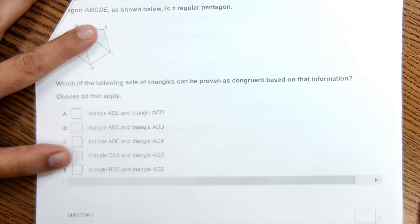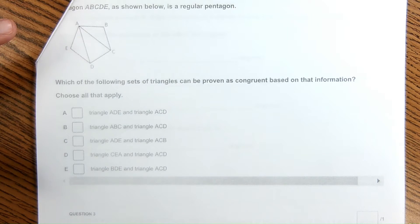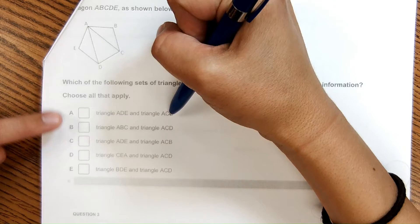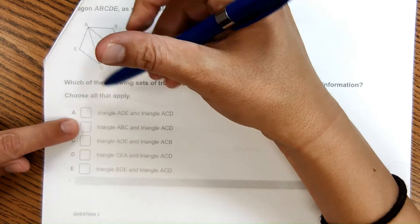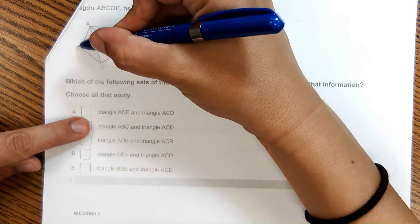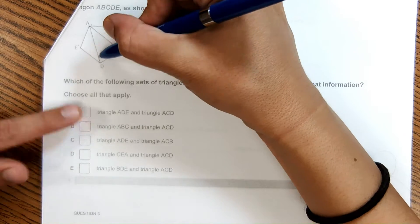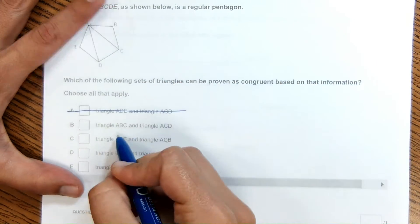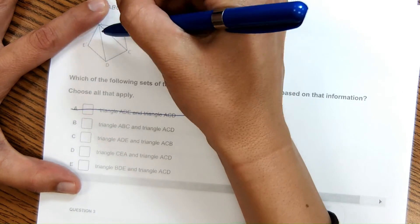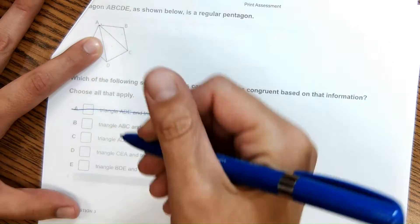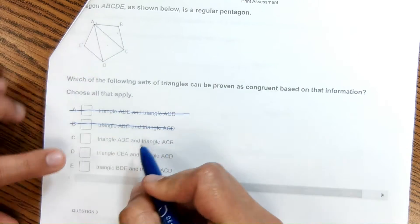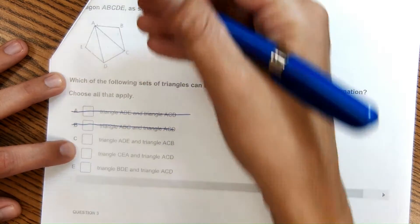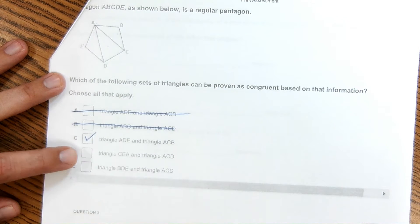Next question. Which of the following sets of triangles can be proven as congruent based on the information? Choose all that apply. I'm going to go through each answer choice and determine whether those triangles are congruent. ADE and ACD, I can see right away those two triangles are not congruent, so this is not an answer. ABC and ACD, again, I can see that this triangle and this triangle are not congruent. ADE and ACB, yes, those two triangles are congruent, so that is a correct answer.